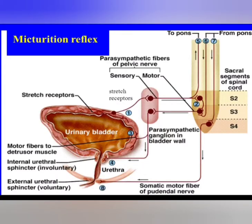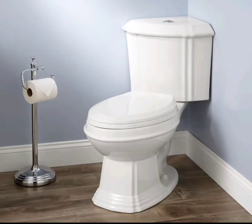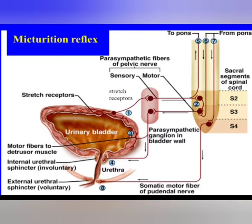In the involuntary micturition reflex, stretch receptors located within the wall of the bladder signal the spinal cord. This occurs when the stretch receptors are stretched to hold 200 milliliters or more of urine. The stretch receptors then transmit afferent signals to the spinal cord.